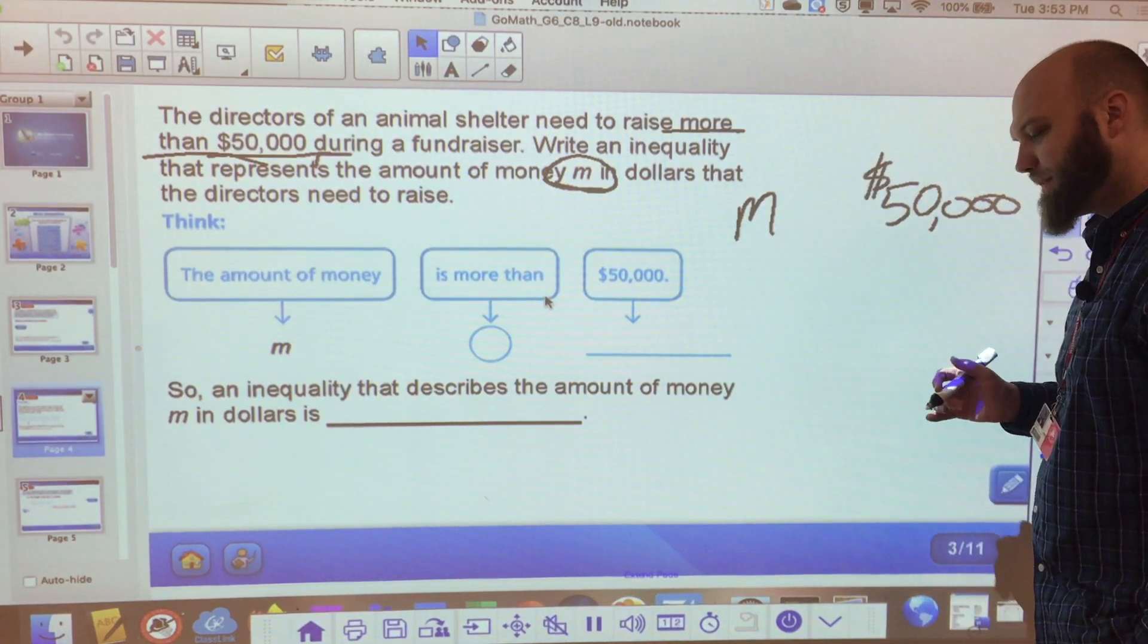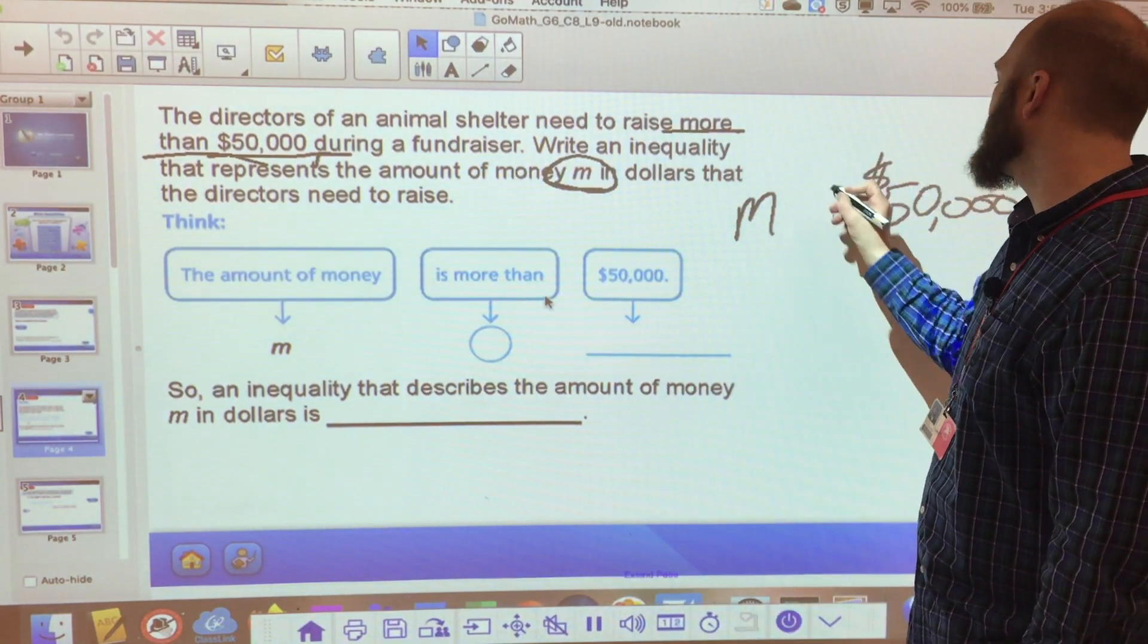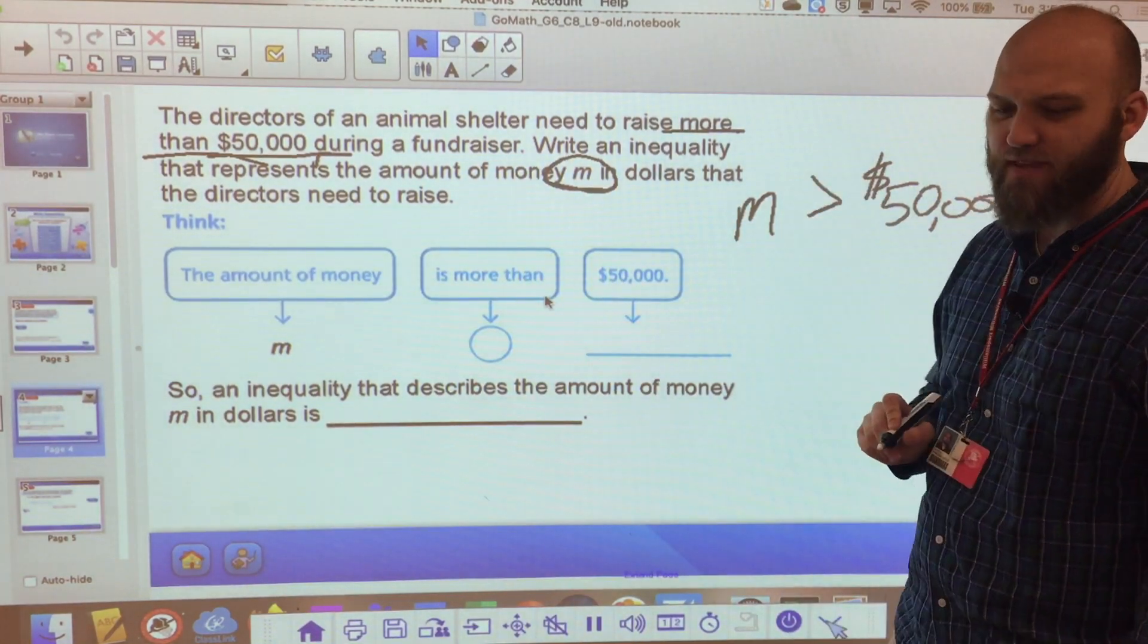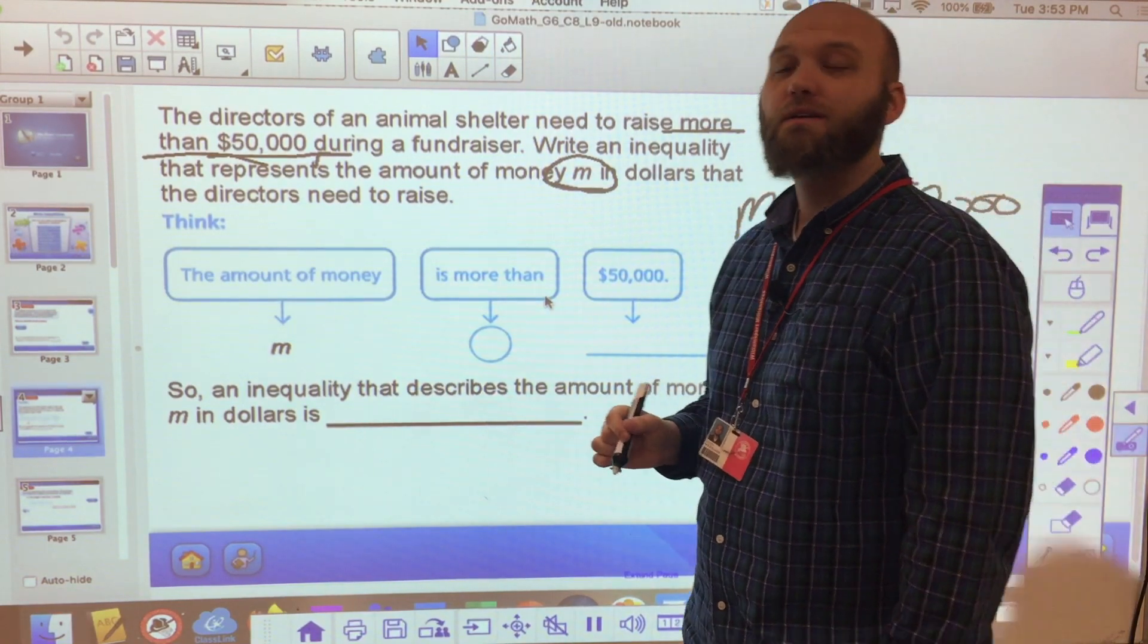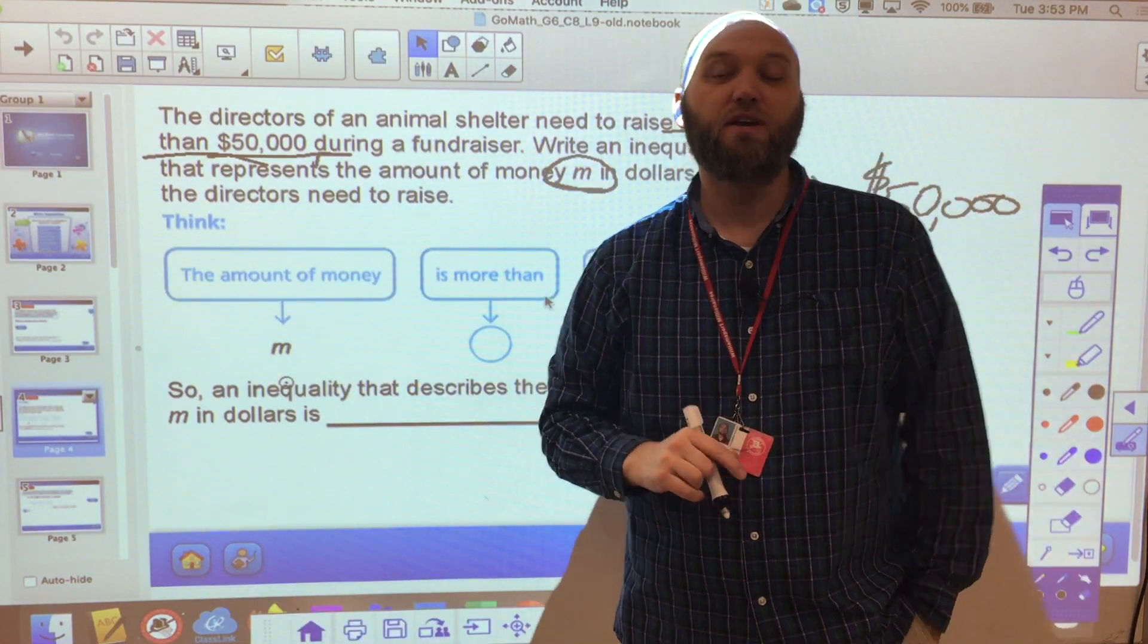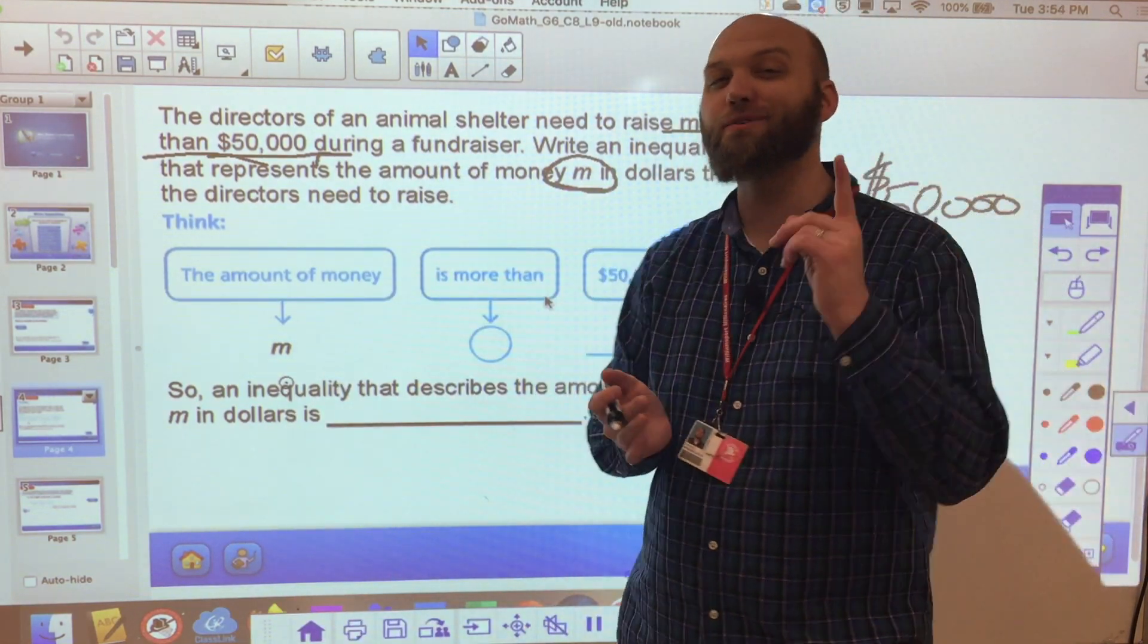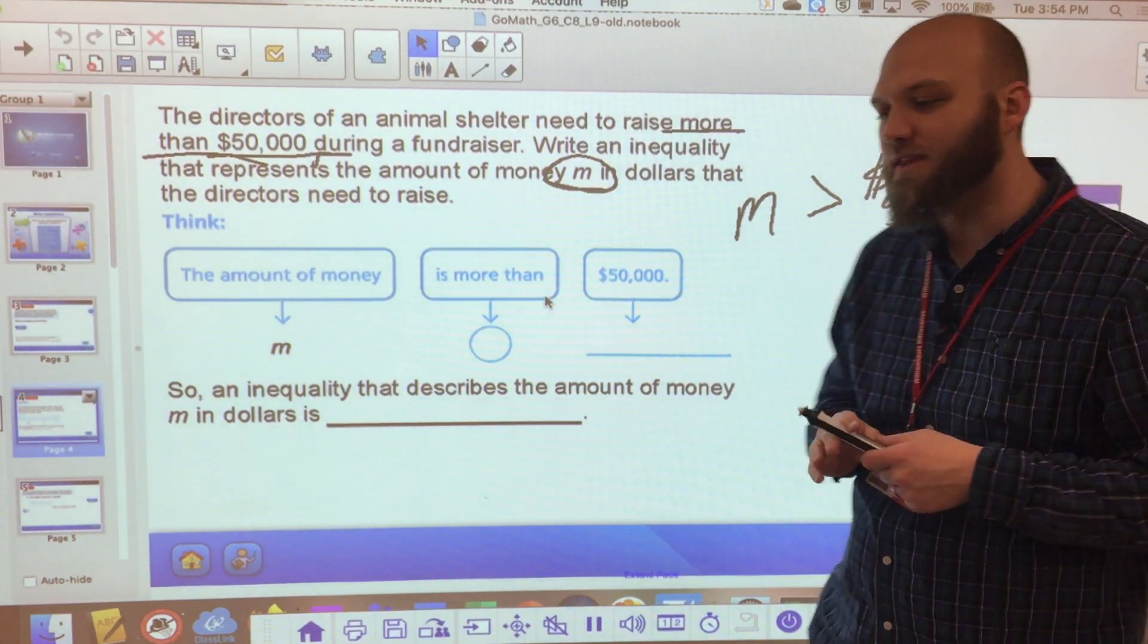The question that I have, M needs to be more than $50,000. So I know that M is going to be bigger than $50,000. But could M be $50,000? Technically, no, because it says they need more than $50,000. So that could be $50,000 and one, and that would technically work. But it cannot be equal to because M is going to be greater than $50,000.